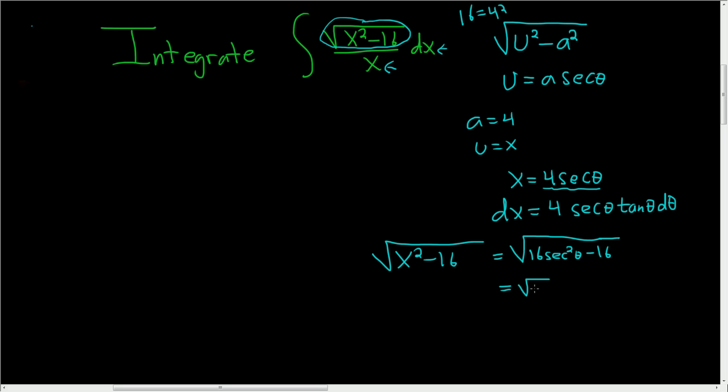We can factor out a 16, so we get the square root of 16 times the square root of secant squared theta minus 1. This is 4. Secant squared minus 1 is tangent squared, and we end up with 4 tangent theta.